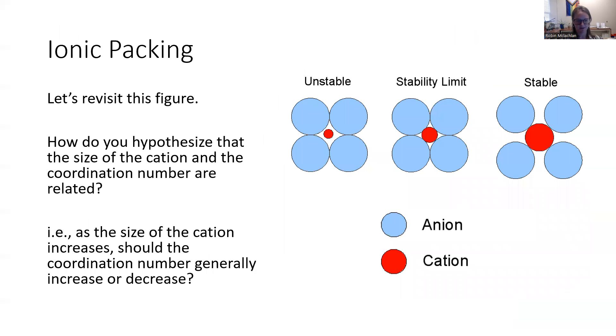Now let's revisit this figure. How do you think the size of the cation, that red positively charged ion in the middle, how do you think the size of that relates to the coordination number? In other words, as the size of the cation increases, should the coordination number, the number of anions around it generally increase or decrease?